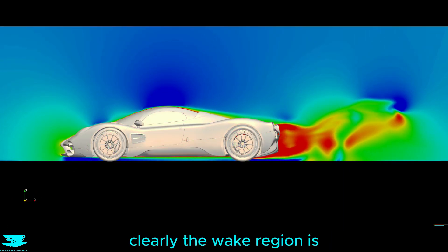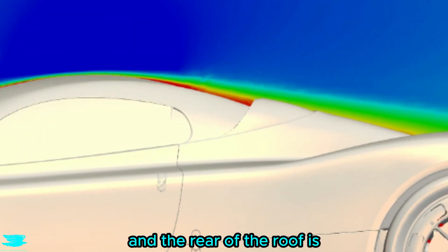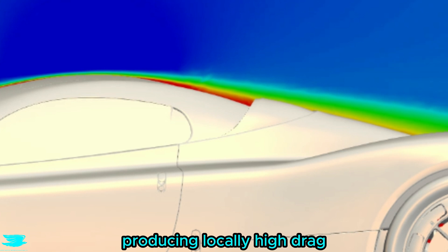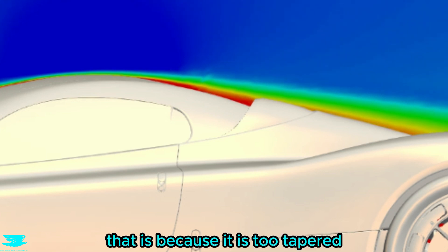Looking at the drag, clearly the wake region is producing the lion's share, and the rear of the roof is the only other region producing locally high drag. That is because it is too tapered.